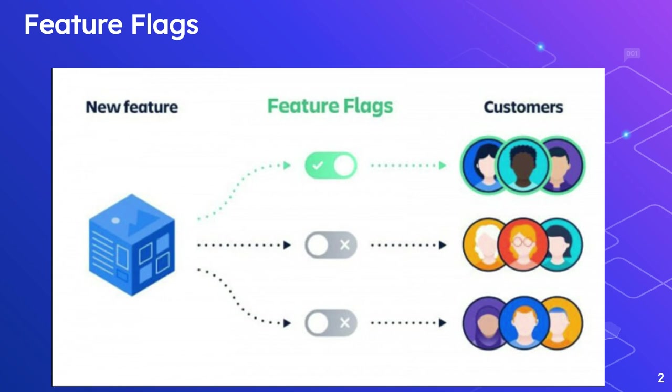Sling feature flag support consists of two parts. The first one is the feature flag itself, represented by the feature interface, and the second one is the application providing a feature guarded by the feature flag. A feature flag is simply a boolean condition that modifies the behavior of a component, module, or function in your application.